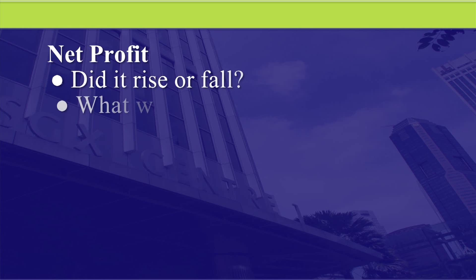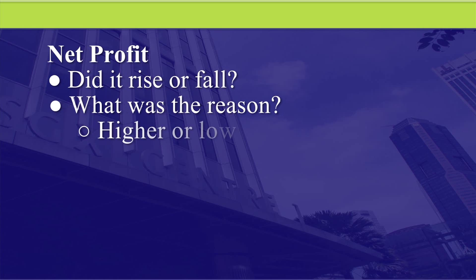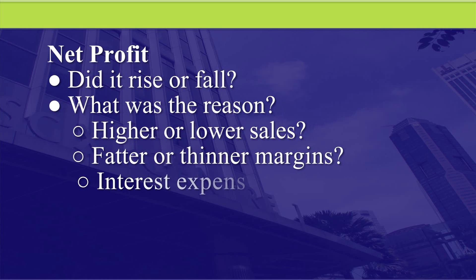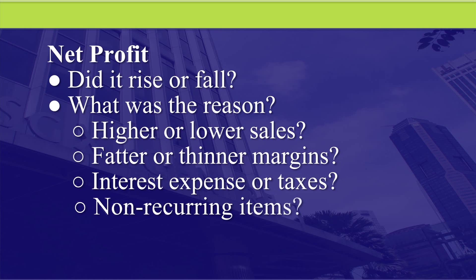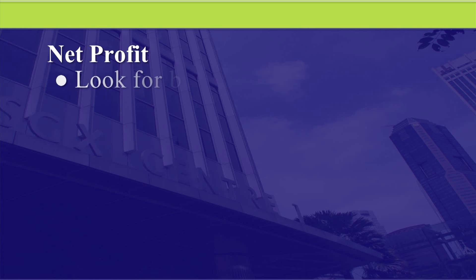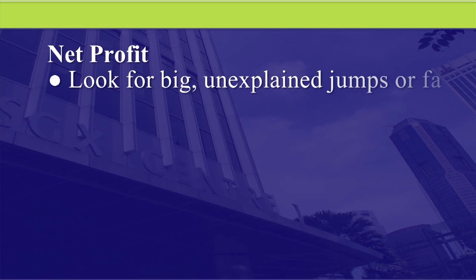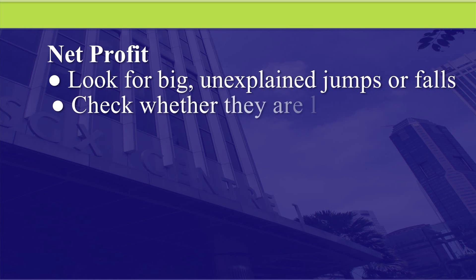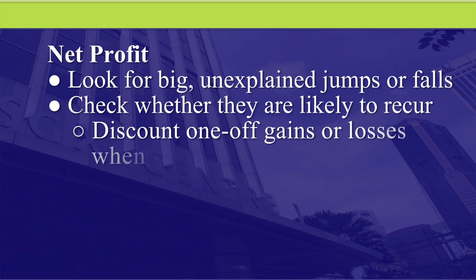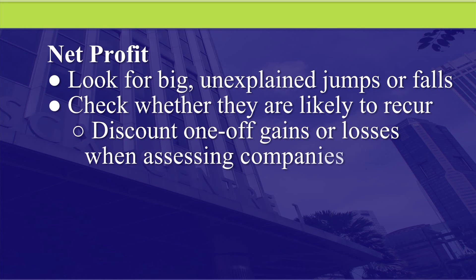What should you note about net profits? Has it risen or fallen? Why? Was it due to sales or was it due to a margin squeeze? Sometimes you will note some items that a company does not expect to recur — these are also called non-recurring items. Look for any unexplained jumps or falls in items under the income statement and ask if this is likely to recur in the next few years or not. If these items are not likely to repeat themselves, then exclude them from consideration.